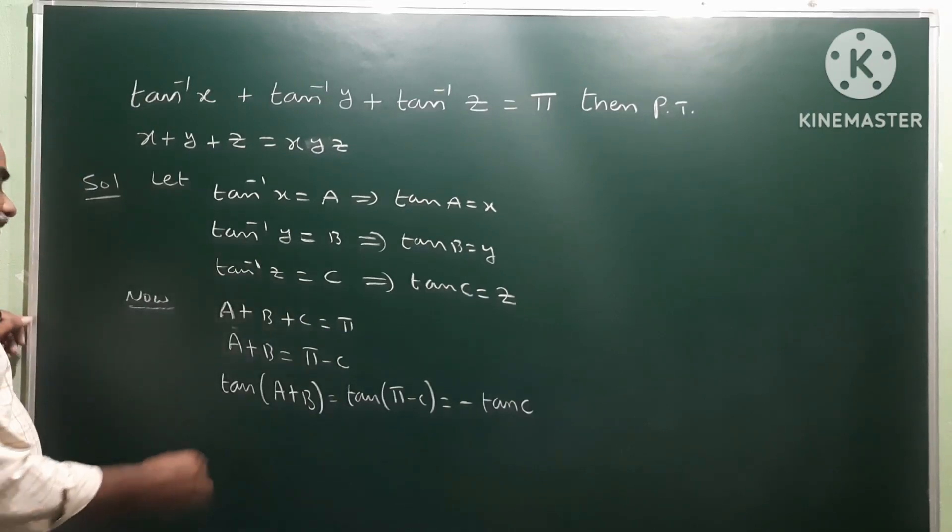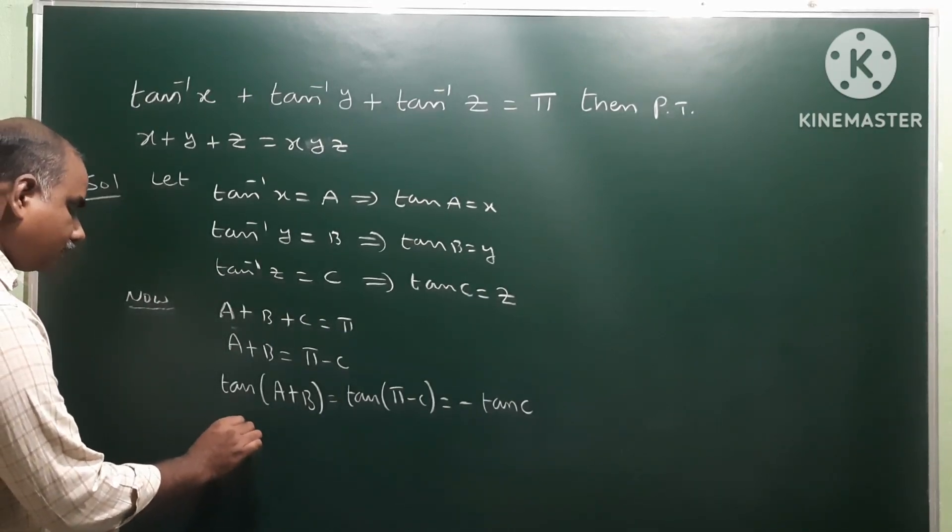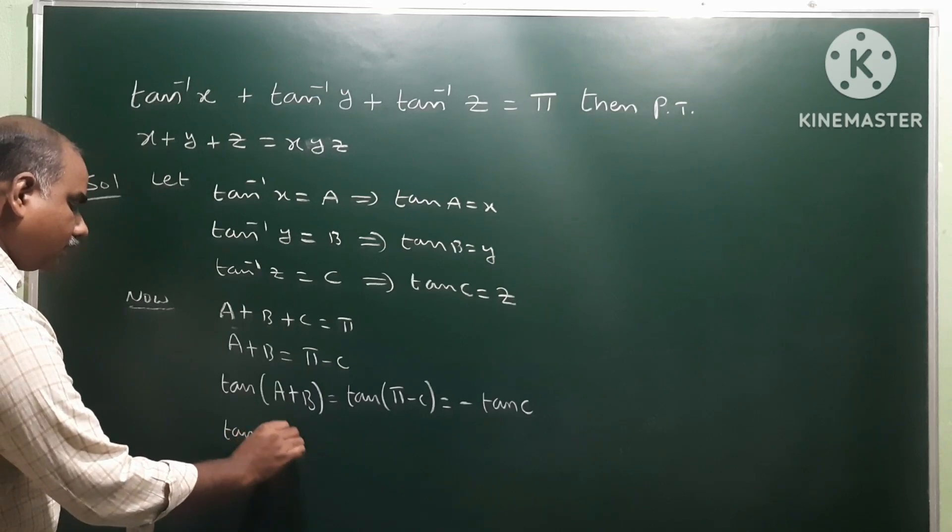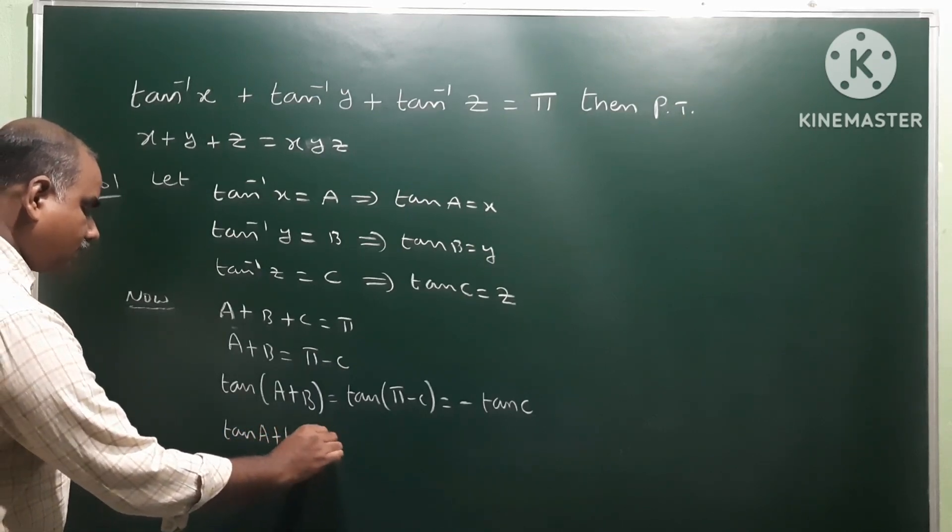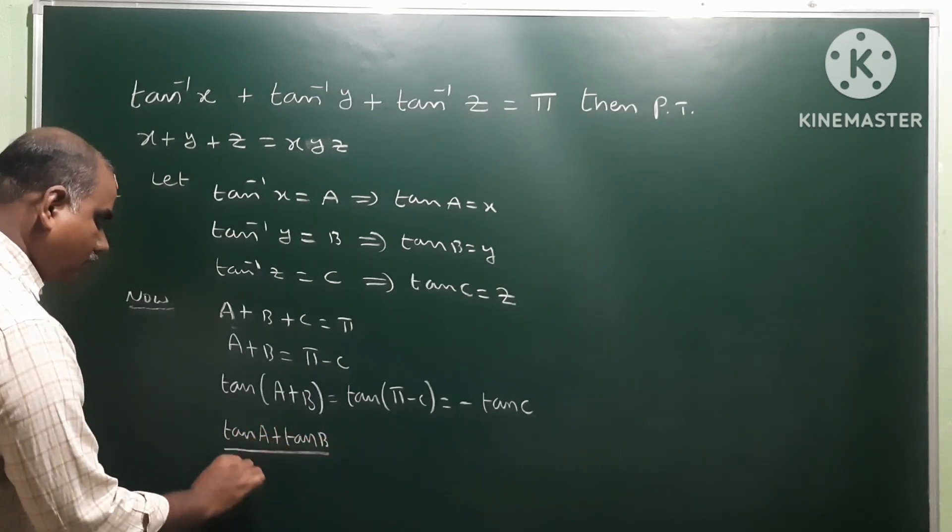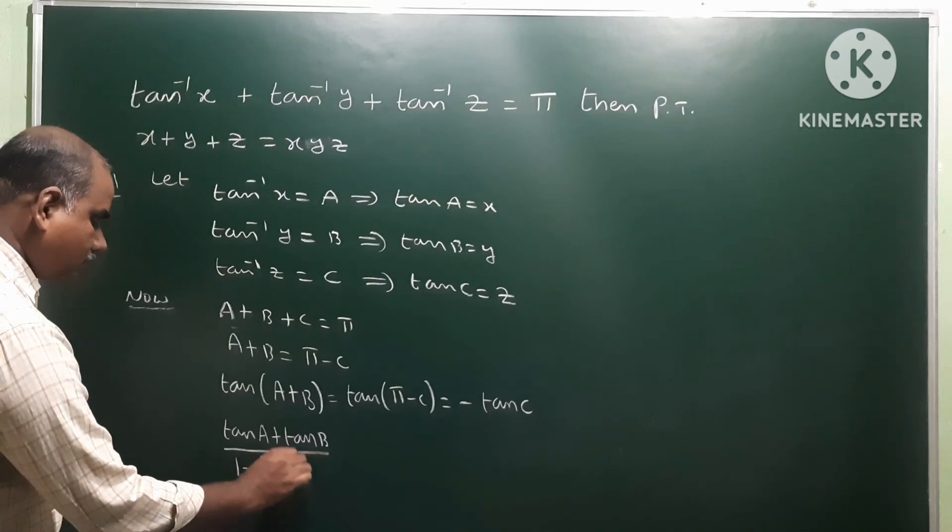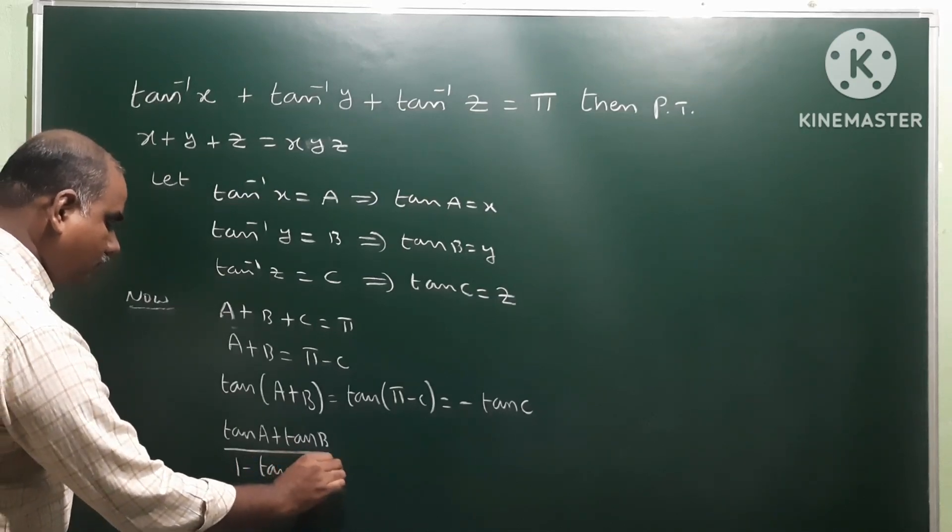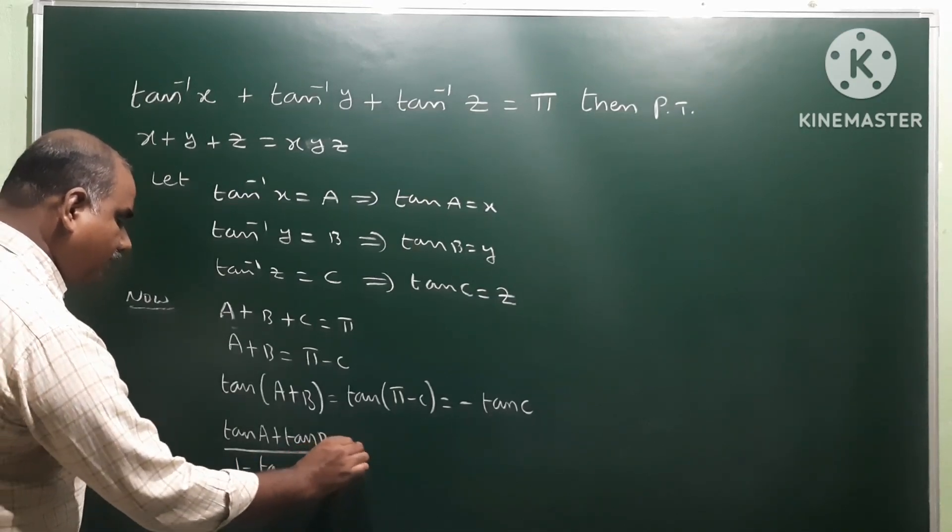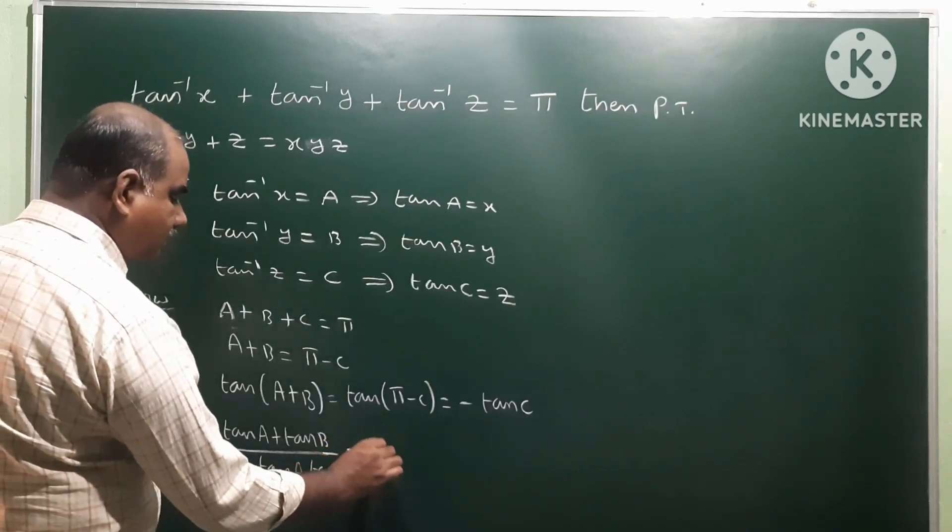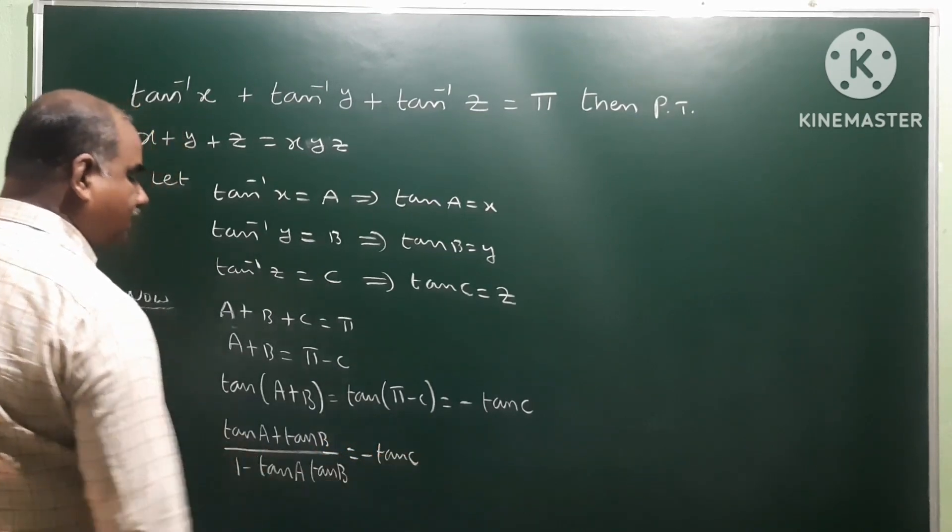And write the formula tan of A plus B. Tan A plus B means tan A plus tan B by 1 minus tan A tan B.